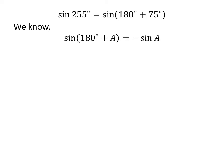We know the trigonometric identity: sine of 180 degrees plus A is equal to minus sine of A. The proof of this identity is explained in the video appearing in the upper right corner, and the link is also given in the description. So, sine of 255 degrees is equal to minus sine of 75 degrees.